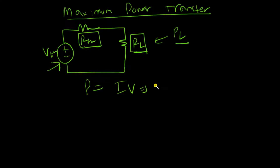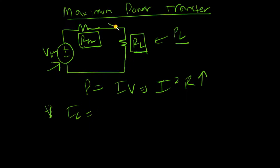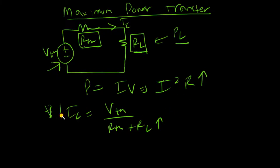The formula of power is IV, which can also be written as I²R. A layman would say the easiest way to increase PL would be to increase RL, because that increases power. But what you need to know is that the current through the resistor, IL, equals V_thevenin over (R_thevenin + RL). So if you increase RL, IL goes down, and if current goes down, power goes down too. You need to find a middle ground.